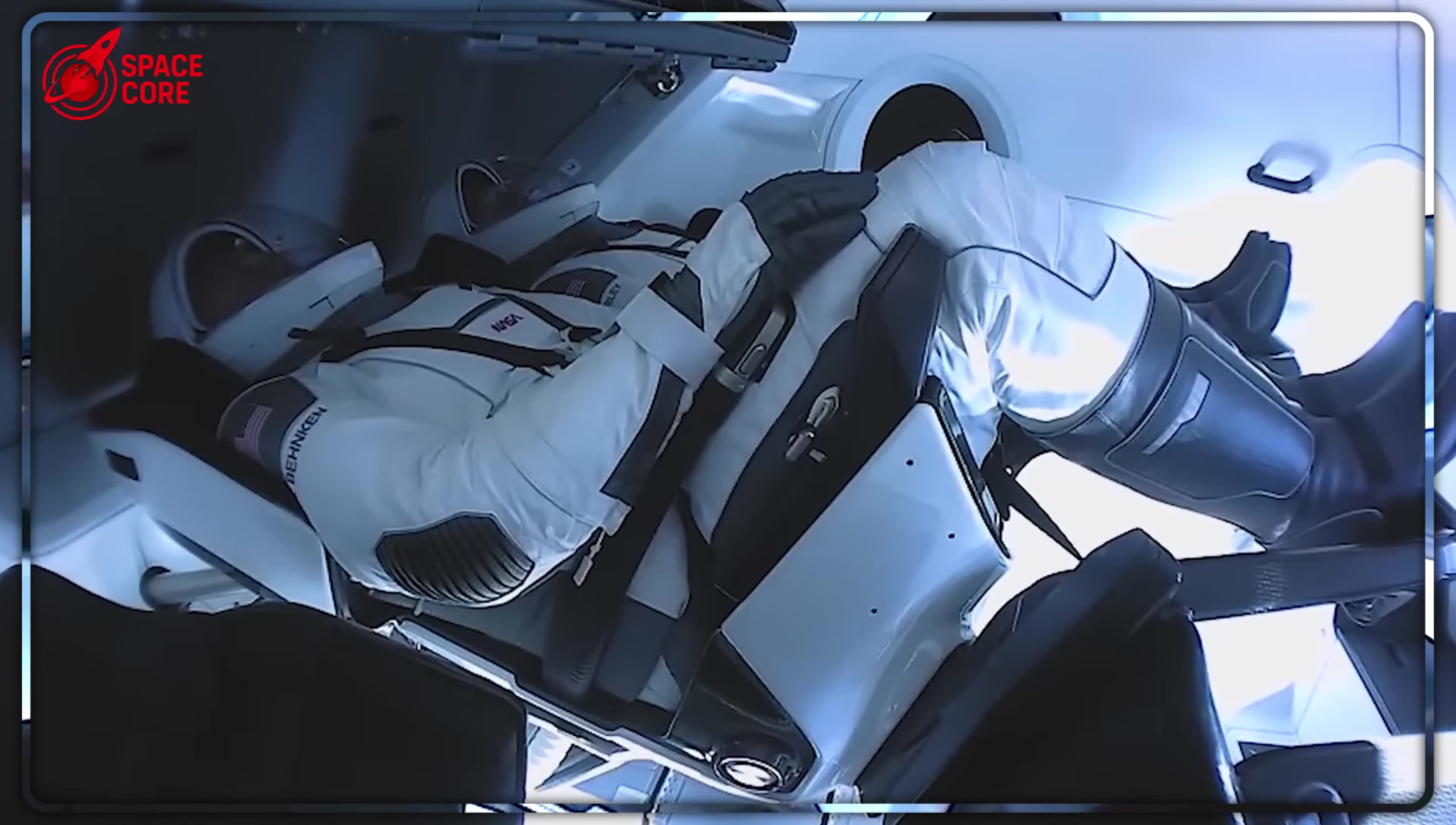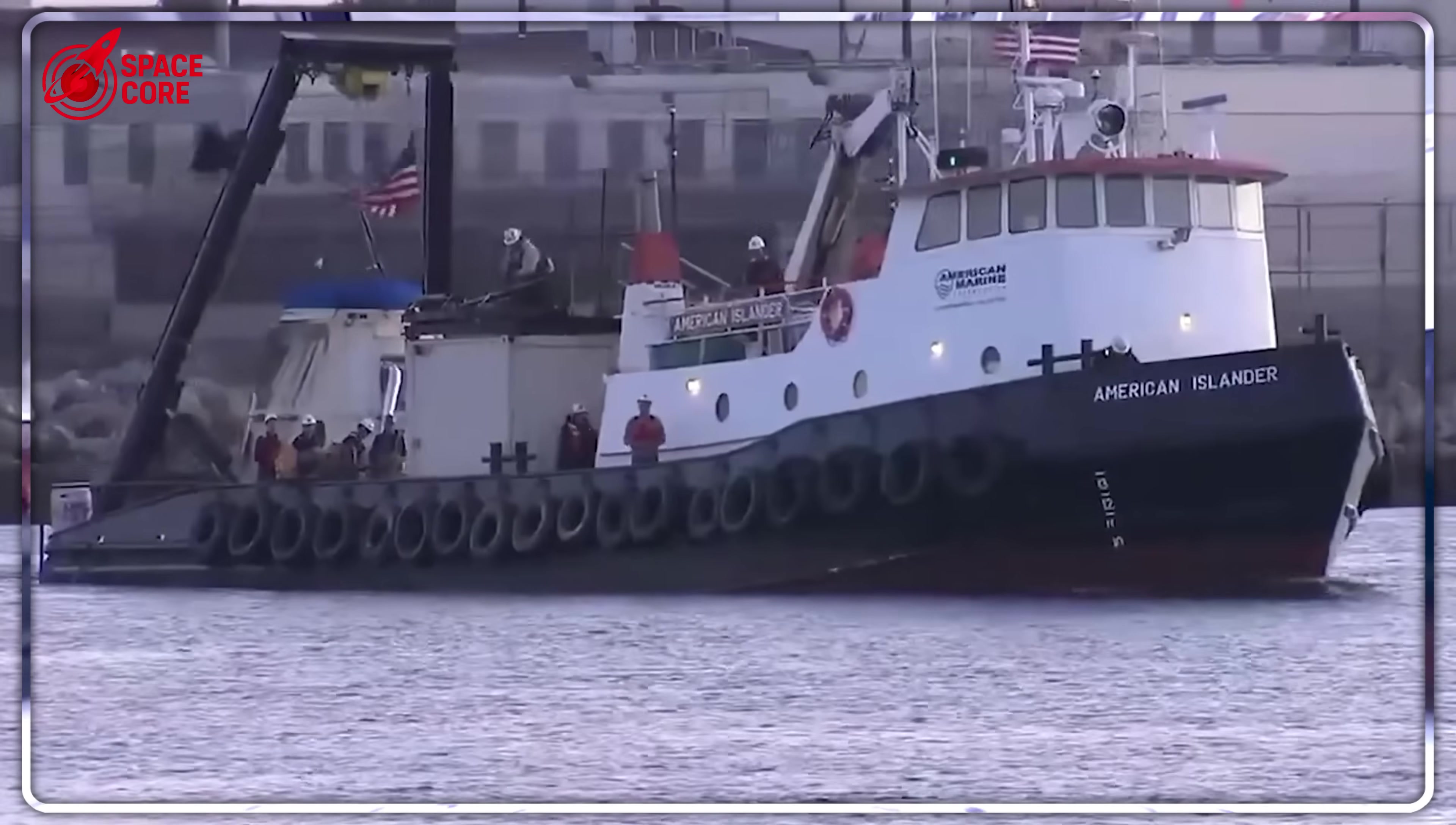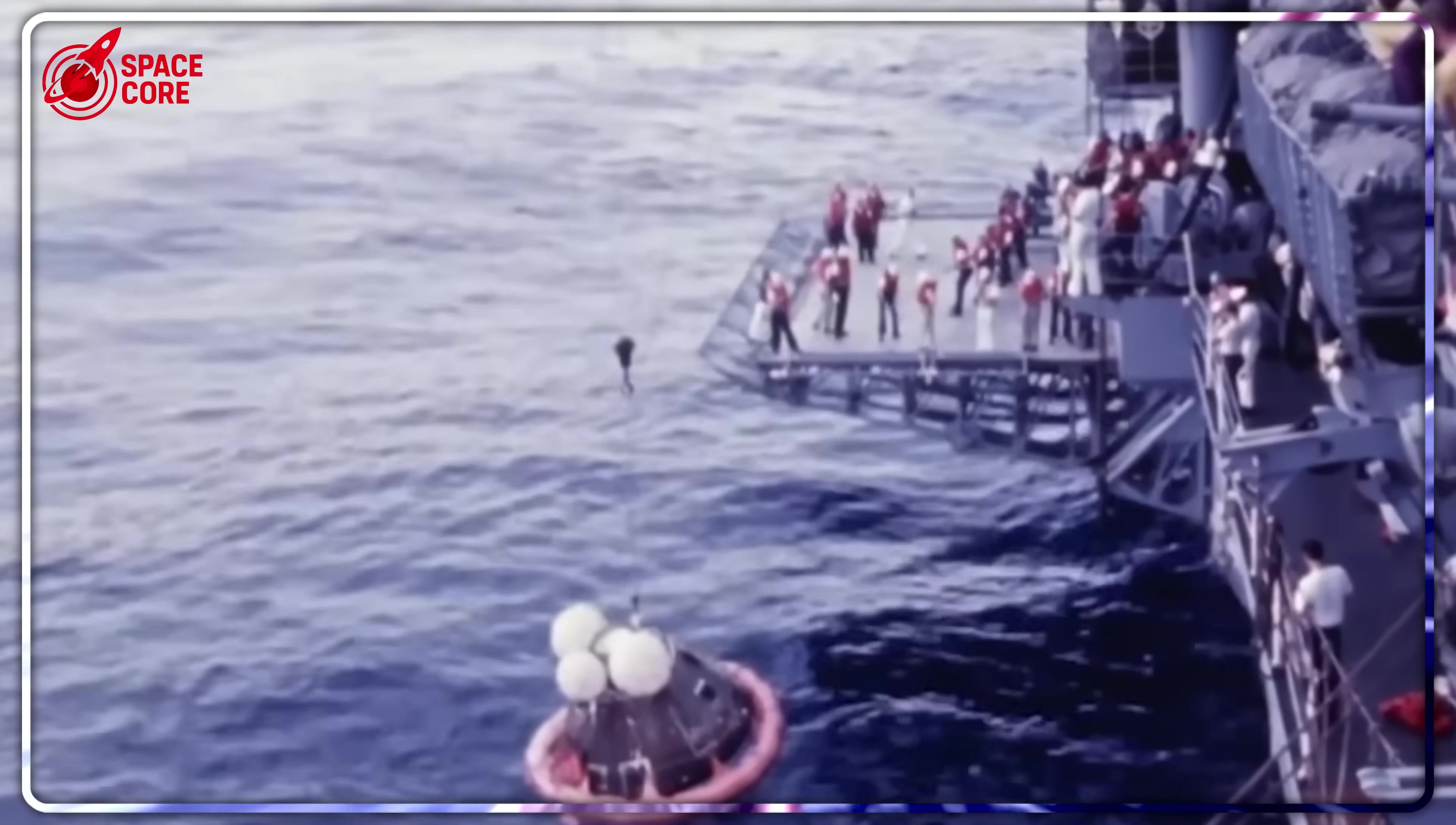Despite the setbacks, SpaceX kept working on propulsive landing as a backup system. The plan seemed perfect. Try rocket landing first. Deploy parachutes if anything went wrong. April 20th, 2019 shattered that illusion forever.